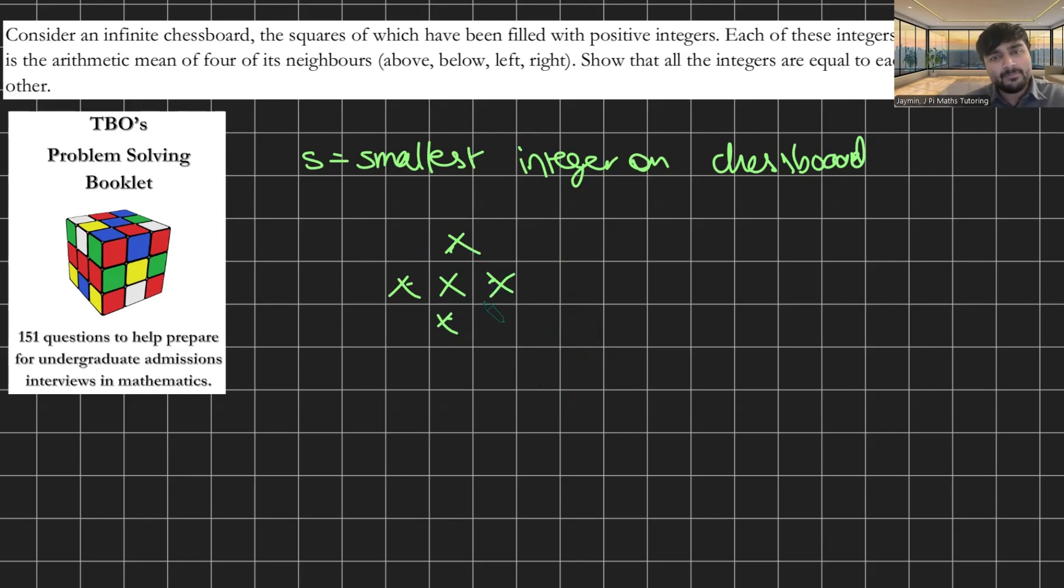But if you have one that's different, then you can guarantee, you know, you're guaranteed to be able to jump to a neighbour that's smaller than X. So let's say it's this guy. And this guy here is, I don't know, X minus two. So now you've started from X and you've jumped to a square which is smaller than X. Okay.